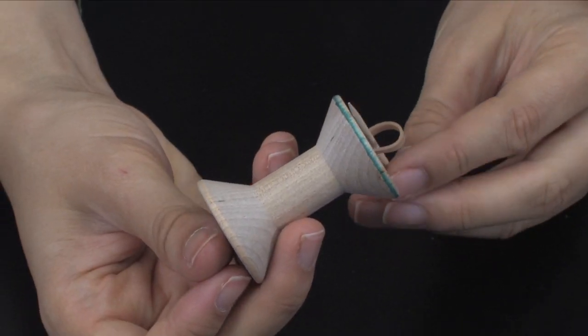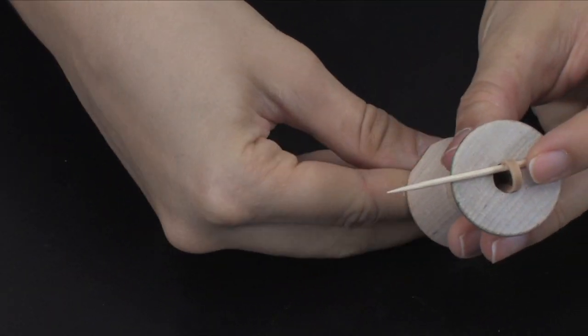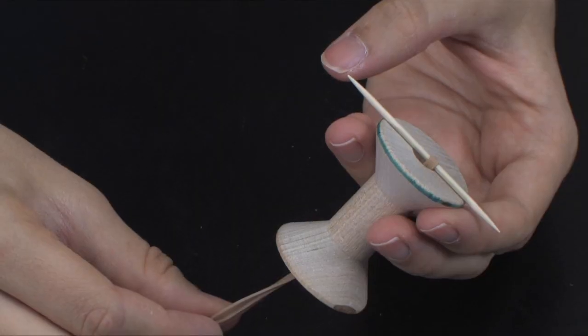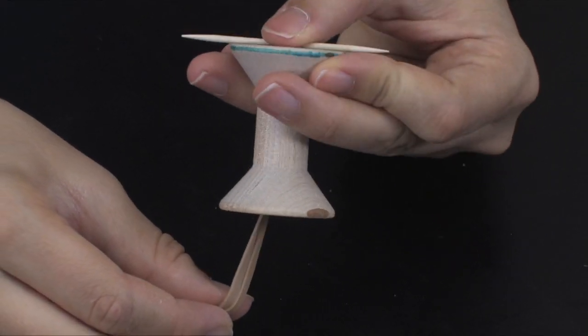Students will thread the toothpick through the loop of the rubber band hanging from the end of the spool. The toothpick should lay flat against the end of the spool because it is looped by the rubber band and held in place.